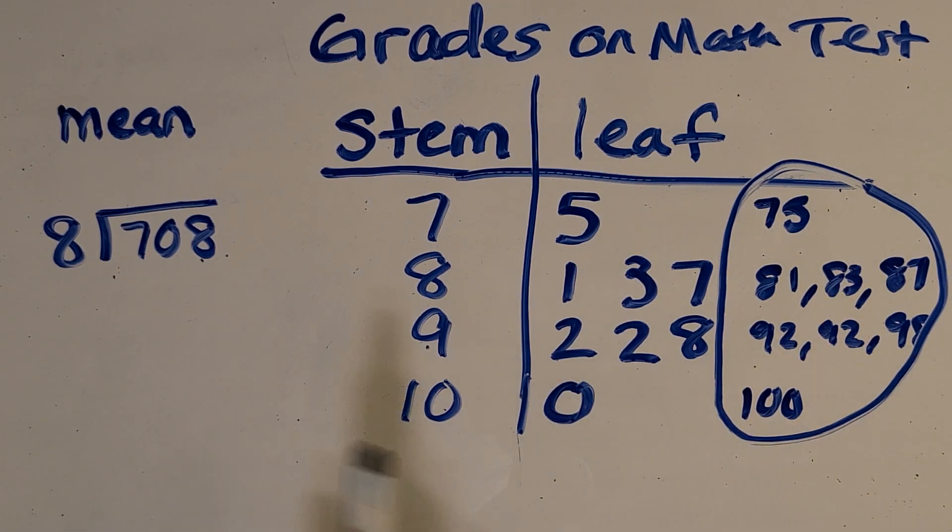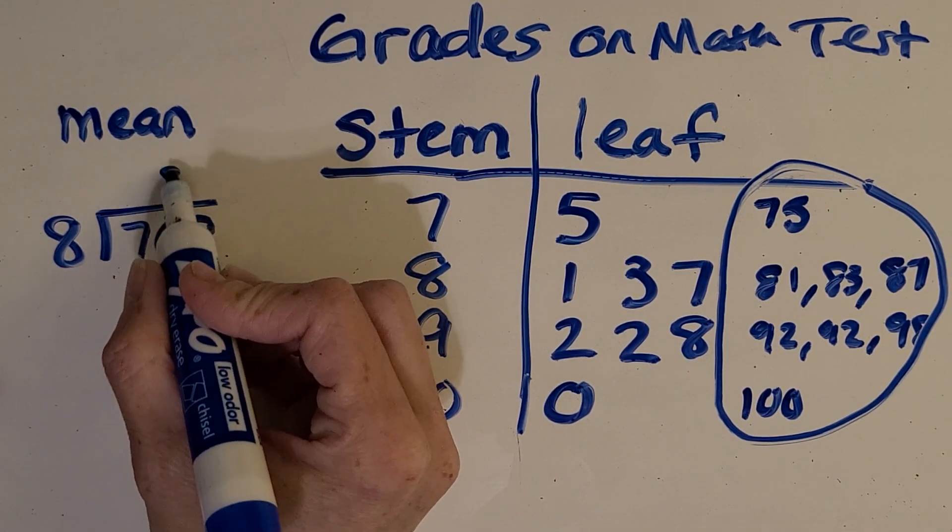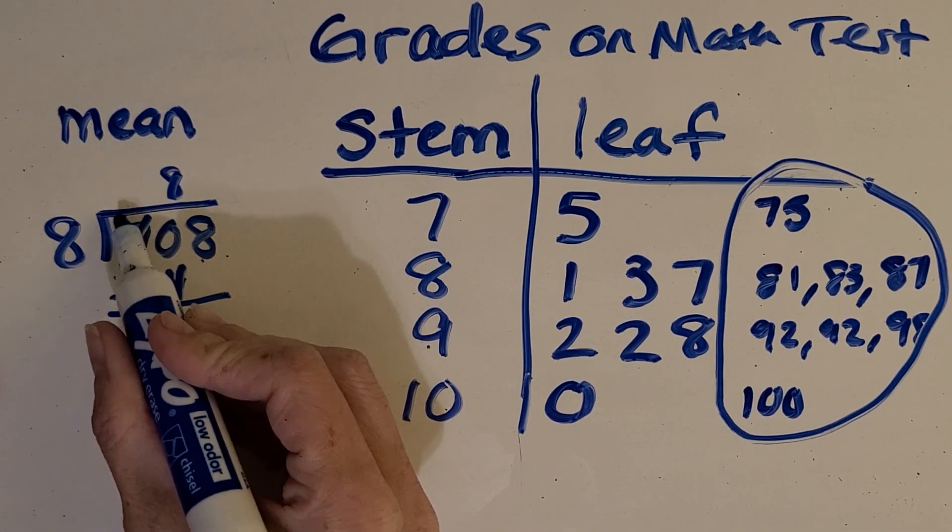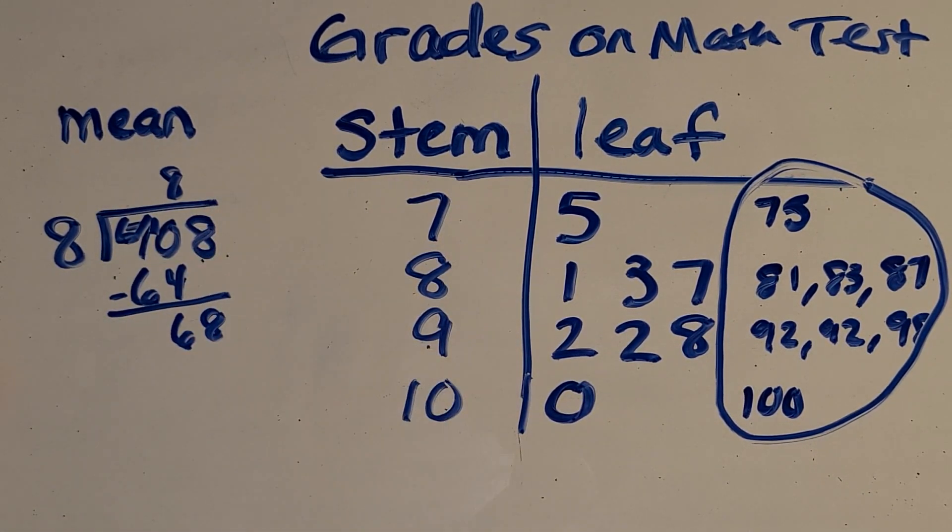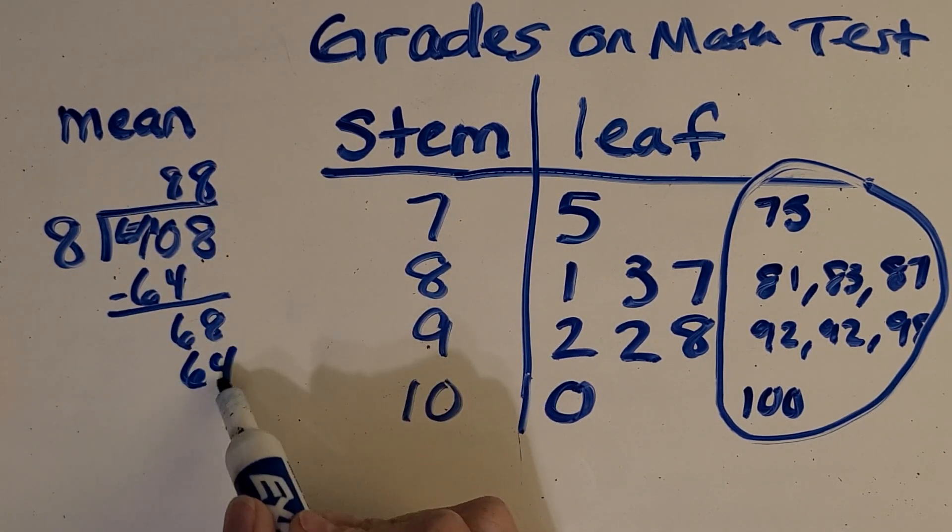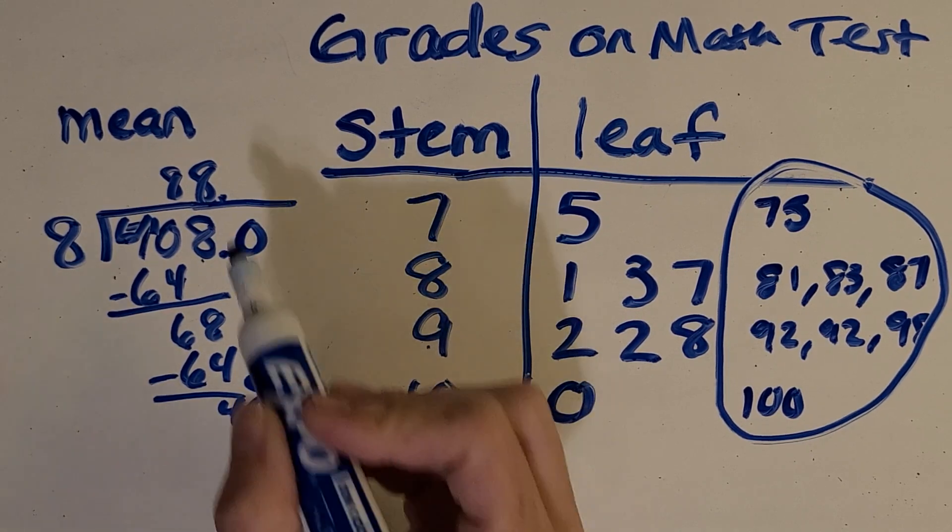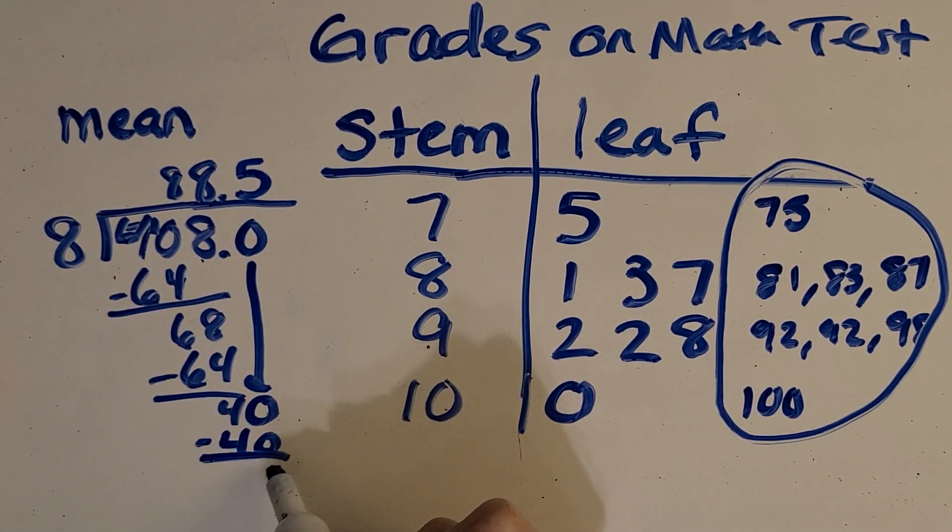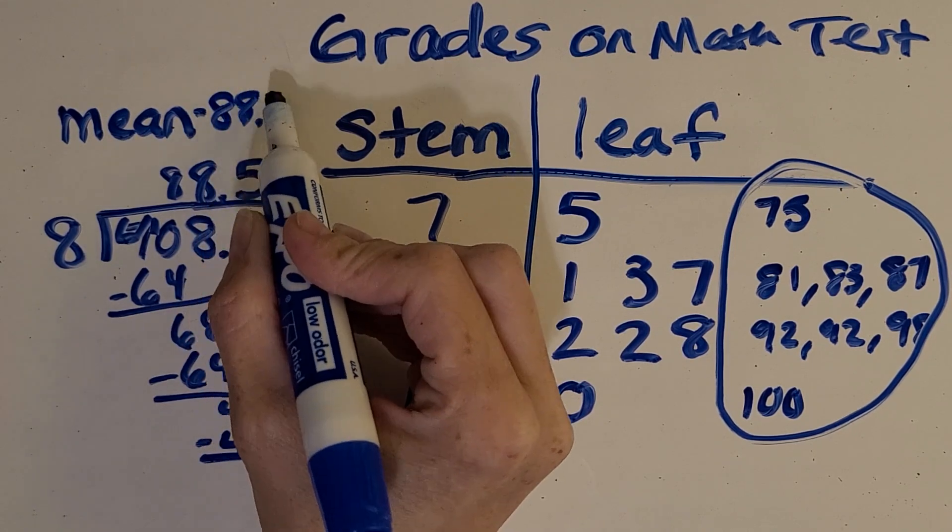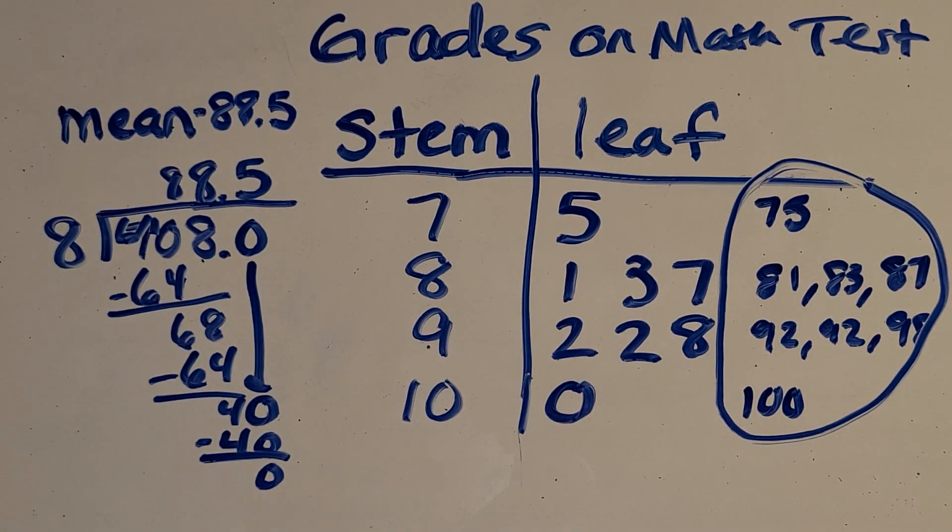So I added up all of the grades and I got 708. And now let's check your division. So I'm going to work through the division algorithm. You can be looking along, seeing if you got the same thing. So I got a mean of 88.5. So that just means the average of this data was about 88.5. The average grade on the test was 88.5.